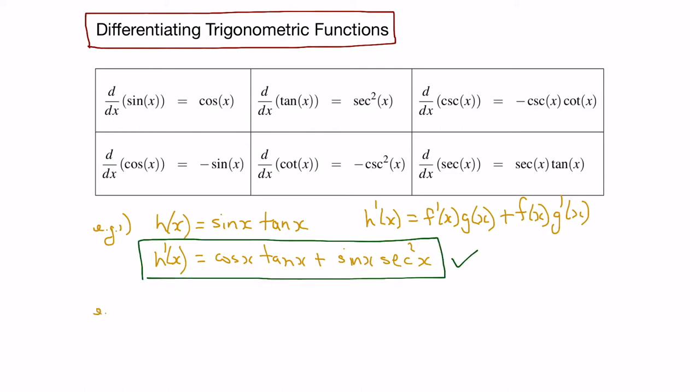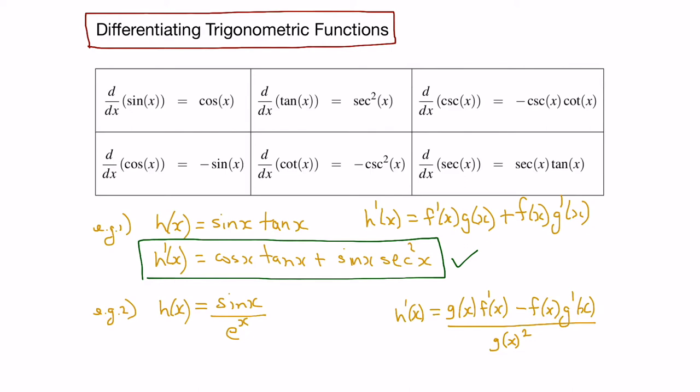Let's take a look at another example. Here we have h of x equal to sin x over e to the x, so we have a trigonometric function and an exponential function being divided. So we can apply the quotient rule. Recall that the quotient rule states that the derivative is the bottom function times the derivative of the top function, minus the top function times the derivative of the bottom function, all over the bottom function squared.